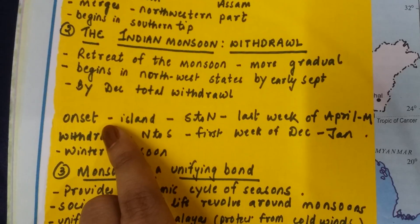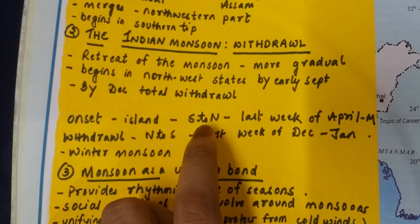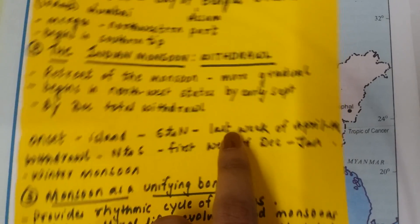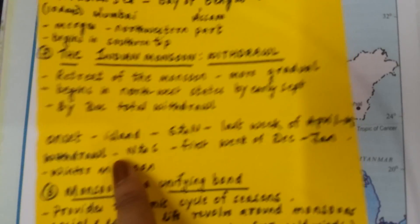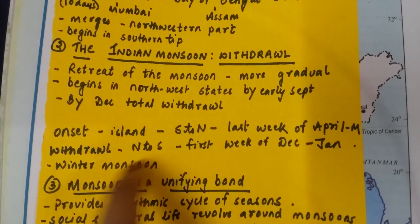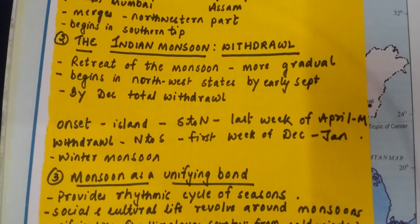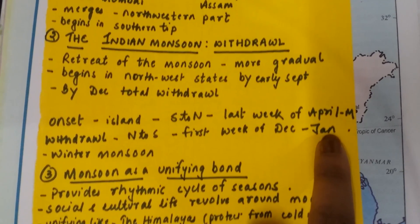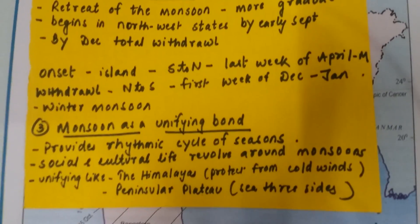To summarize the timing: the onset of monsoon is from the island states, moving from south to north, in the last week of April to May. The withdrawal of monsoon — when it is actually leaving — moves from north to south, in the first week of December, and could extend to January, after which comes the winter monsoon.